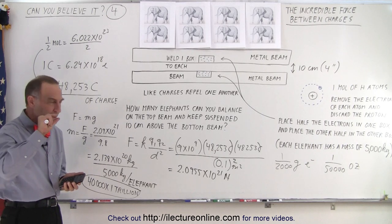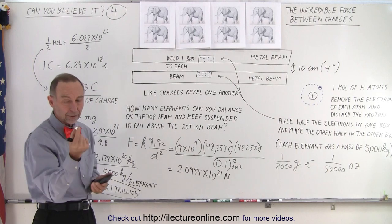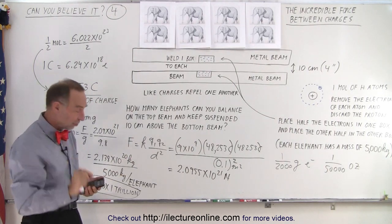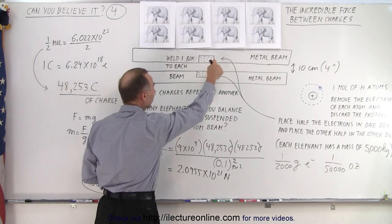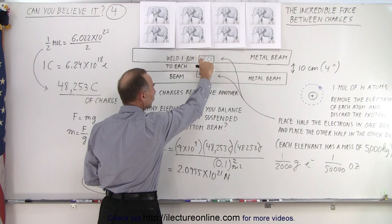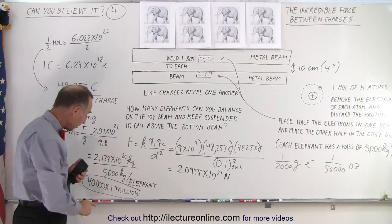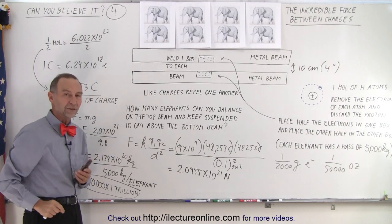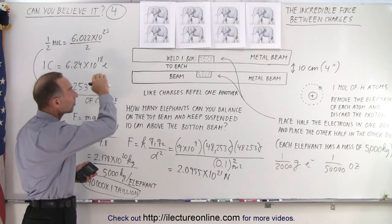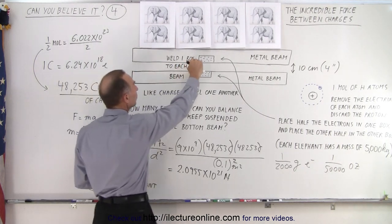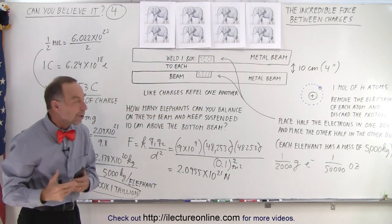We took the electrons off of one gram of hydrogen. One gram of hydrogen, if you push it together, because hydrogen is a gas of course, in a solid state would be about this much. We pluck the electrons off of that, half the electrons go in the top box, the other half go in the bottom box, we have the two beams 10 centimeters apart, and we could put on the top beam 40,000 trillion elephants, not just trillion elephants, 40,000 trillion elephants on the top beam.